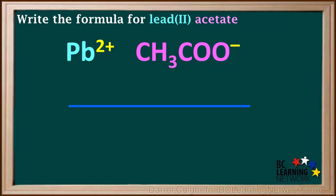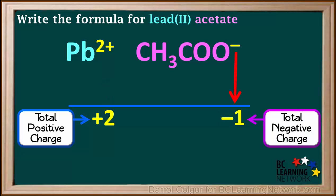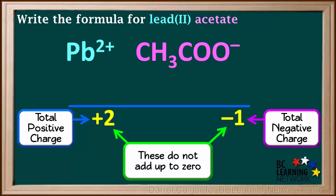With one lead ion and one acetate ion, the total positive charge is +2, and the total negative charge is -1. These charges are not balanced. They don't add up to zero.